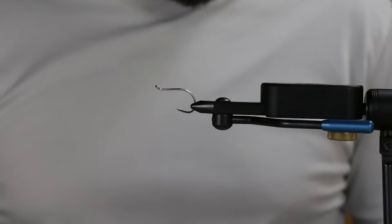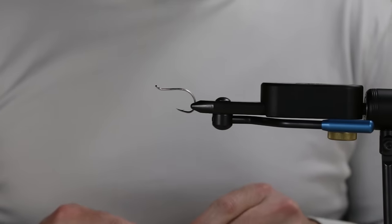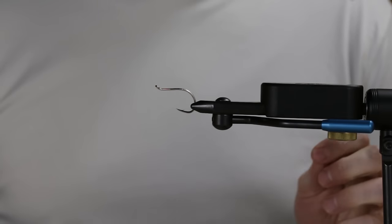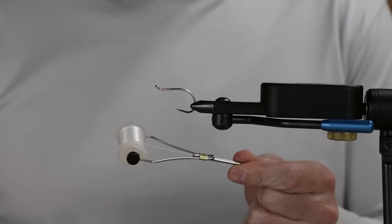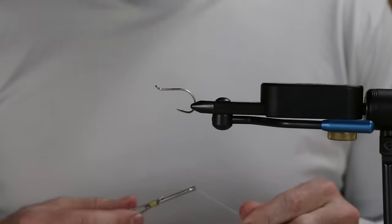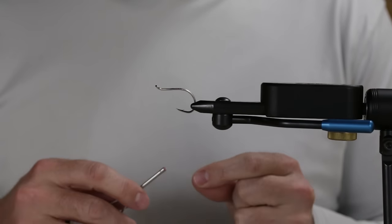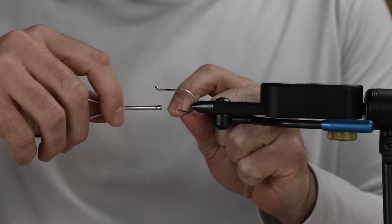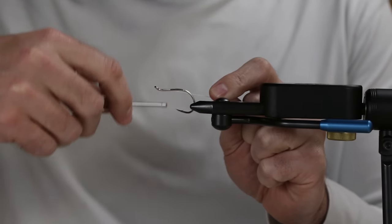We're tying on a Gamakatsu octopus hook today, and I'll give you the details on the materials as I go along. One of the things that's important for this particular fly or any big fly for that matter is your thread. We're using Semperfly nano silk, really good strong thread for tying. It's critical to use super strong thread.